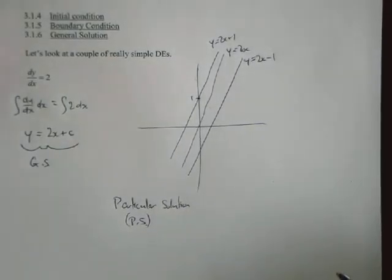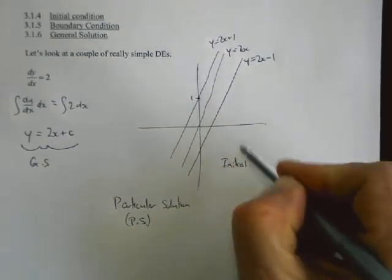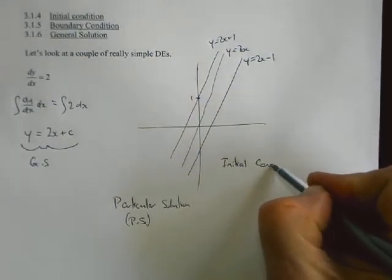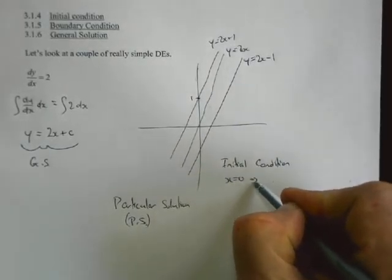Particular solution, which we simplify as PS. You'll often see it abbreviated as PS. So say for example we had an initial condition.